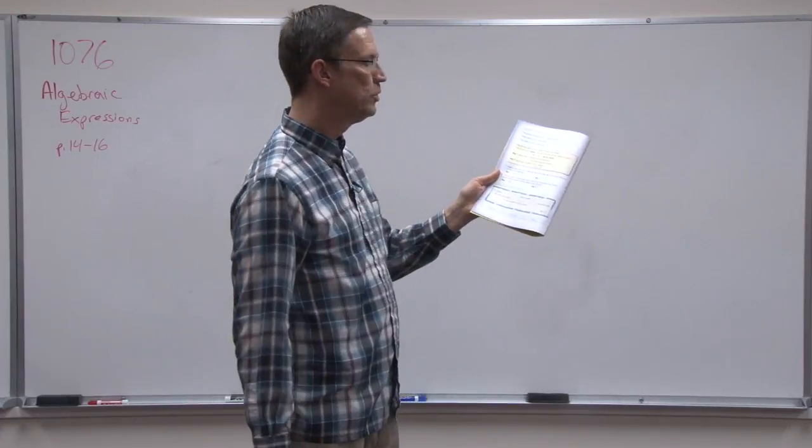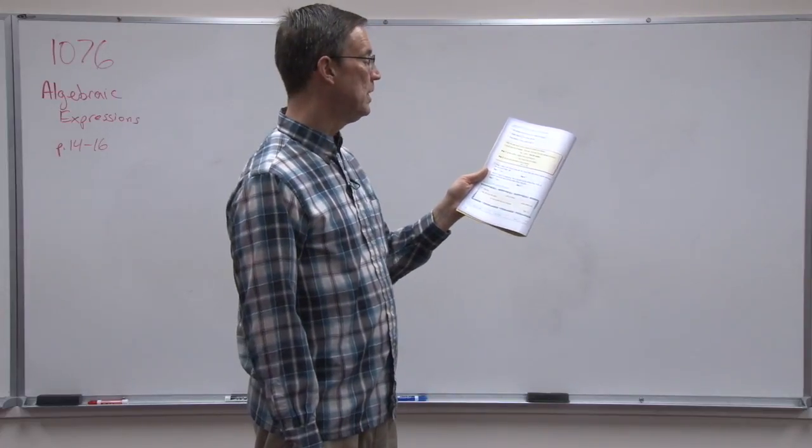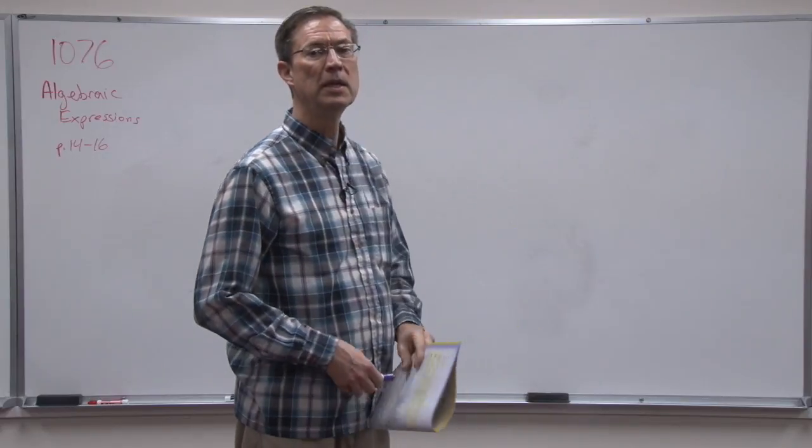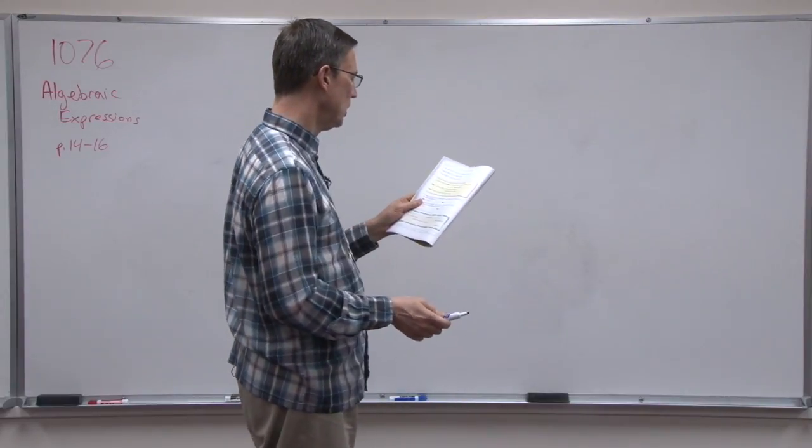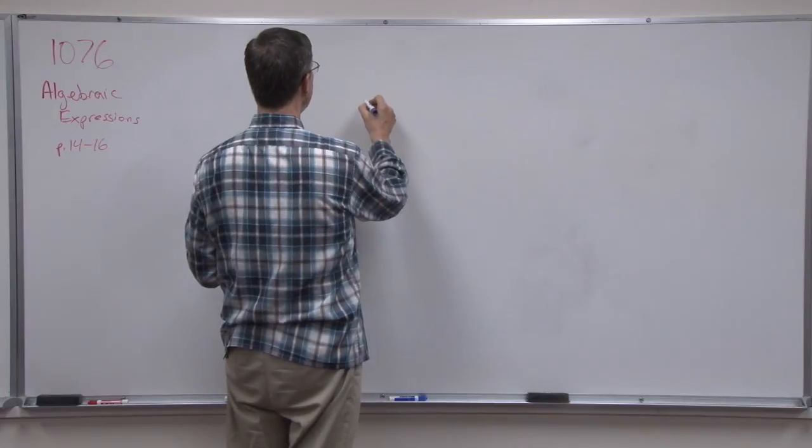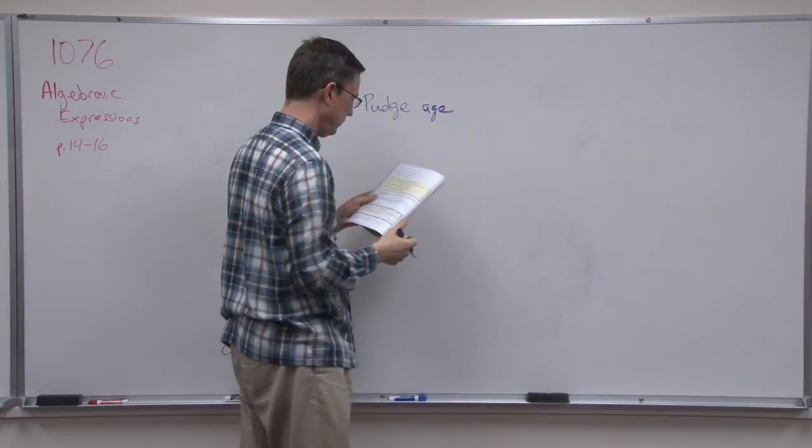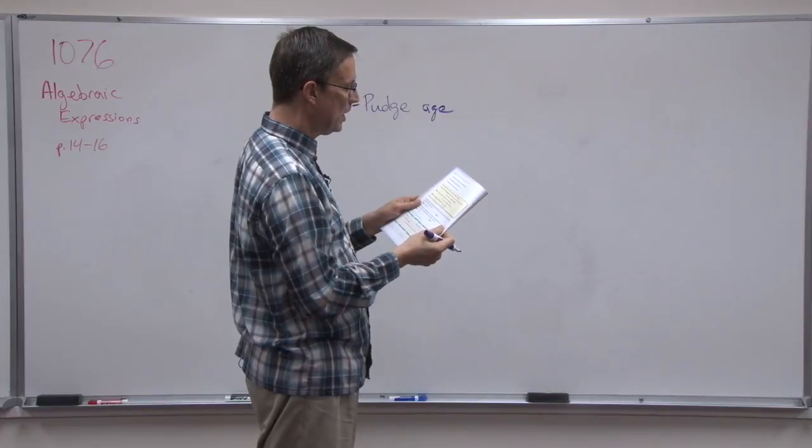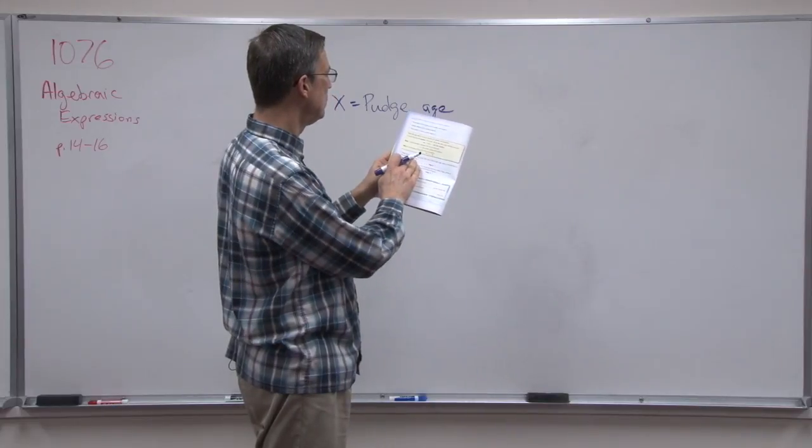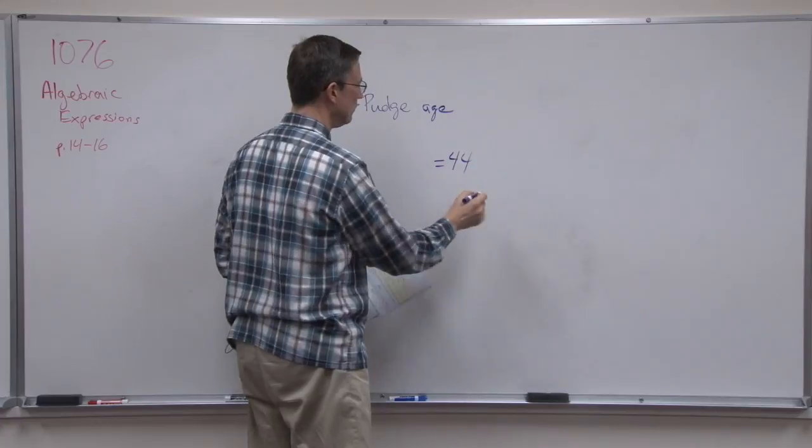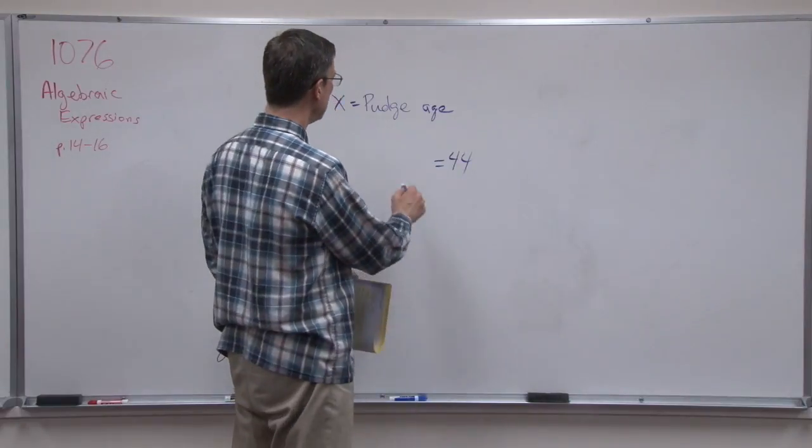Number 4 says Pudge's mother is 44. She is 2 years older than 3 times Pudge's age. Write an equation to find Pudge's age. So we're going to let X equal Pudge's age. Then we're going to make an expression. It says Pudge's mother is 44, so we're going to say equals 44. We know that she is 2 years older than 3 times Pudge's age.